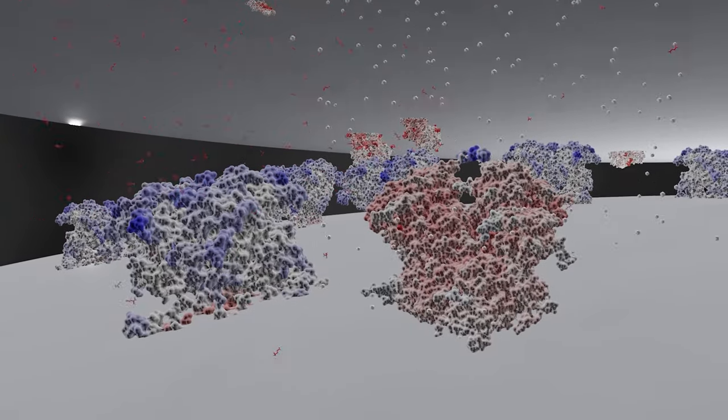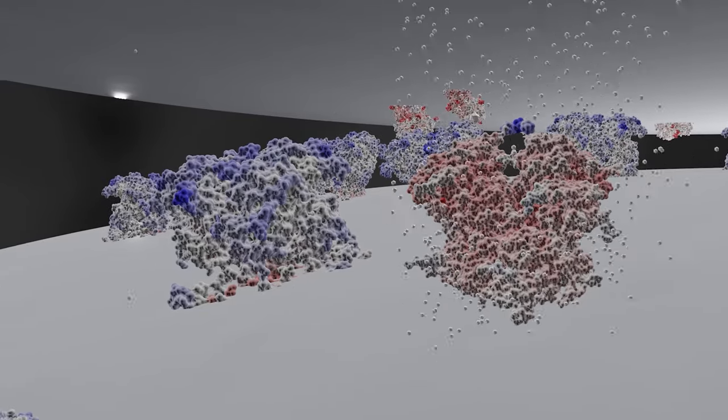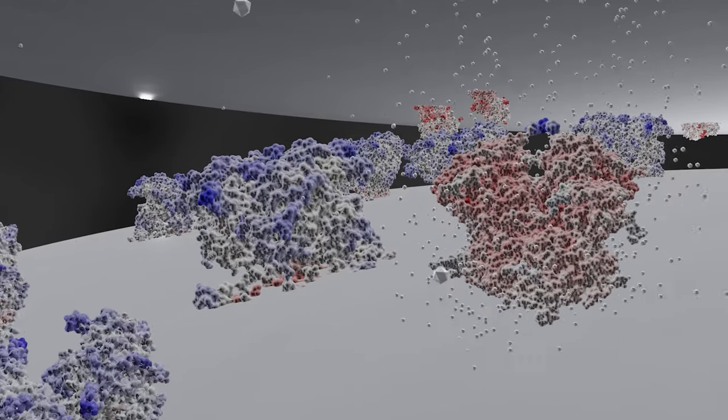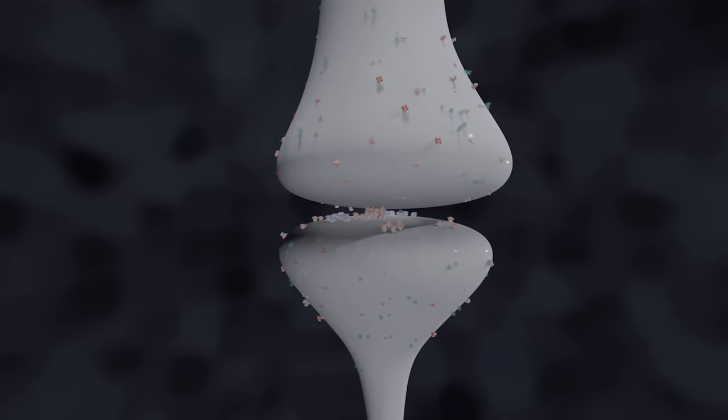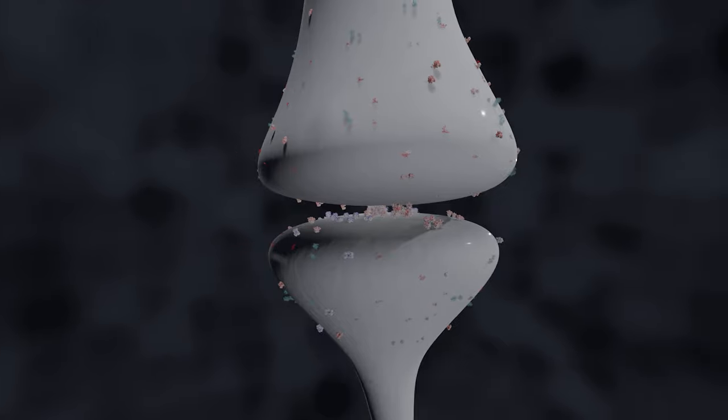If in this very moment, the presynaptic neuron fires an action potential, the receptor opens and allows ions to flow in. This induces downstream signals that lead to the incorporation of more AMPA receptors in the synapse, which increases the synaptic strength.